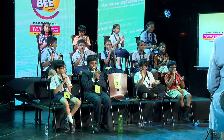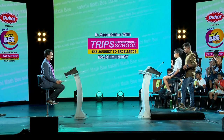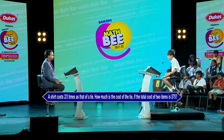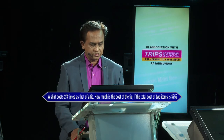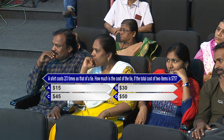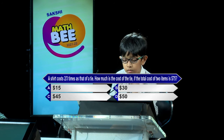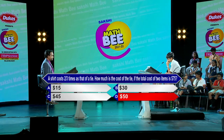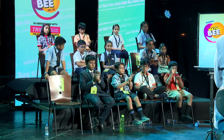Brilliant. May I call the next contestant, Ahan from Chirik International School, Hyderabad. A shirt costs two-thirds times the cost of a tie. How much is the cost of the tie if the total cost of two items is $75? Options: A-$15, B-$30, C-$45, D-$50. Contestant answers option D, $50. Kindly lock option D, $50. Sorry, option D is incorrect. Option C is the correct answer. Never mind. Well done, having come this far. All the very best, Ahan.